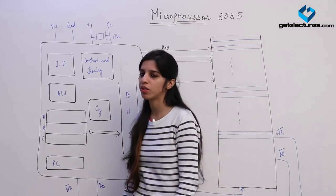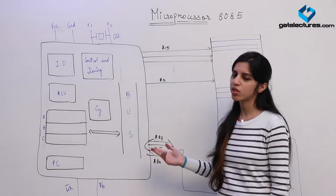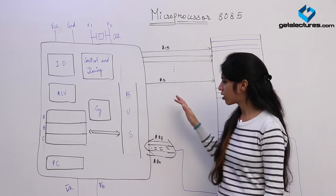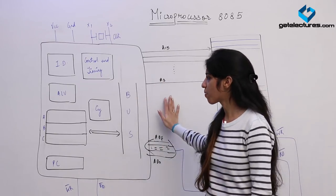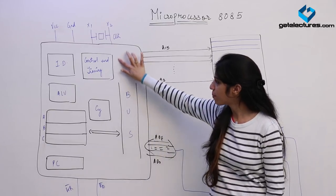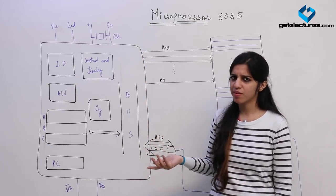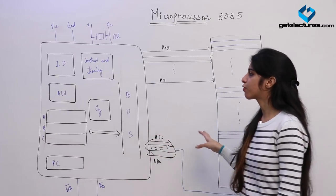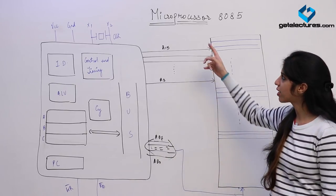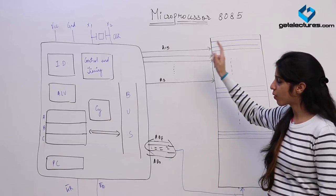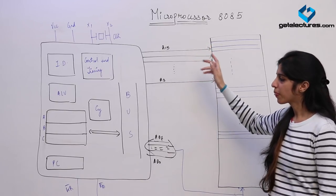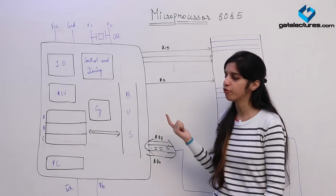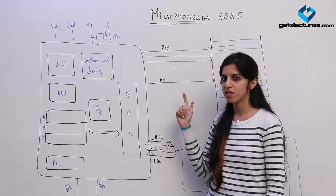In UGC NET exams, they generally ask one or two questions from this topic and the questions are very basic — they are not going into a lot of depth. If you just look at interrupts, flags, and instruction sets carefully, you can get through. This is a very nice, scoring subject. I would advise that you do not leave this subject. Since it is a very logical subject, you do not need to remember a lot of things, so this can give you the extra edge.